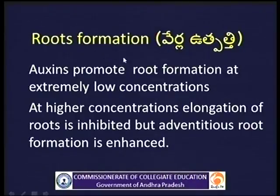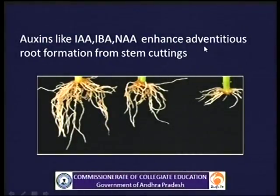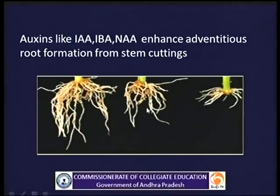Root formation: Auxins promote root formation at extremely low concentrations. At higher concentrations, elongation of roots is inhibited but adventitious root formation is enhanced. Auxins like IAA, IBA, and NAA enhance adventitious root formation from stem cuttings and are vastly used in horticulture to produce plants by vegetative reproduction. By using these auxins, root initiation from stem cuttings can be enhanced.